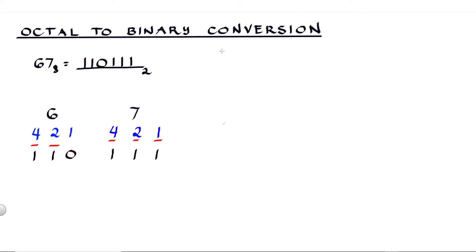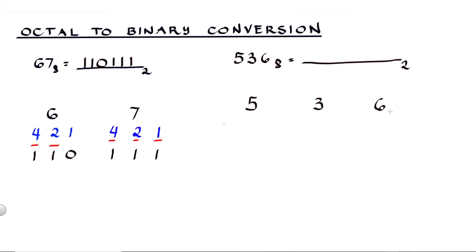For our second example, let's say we have 536 octal and we are going to convert that into binary. Write the numbers with enough space in between — so this is 5, this is 3, and this is 6. Each octal digit is represented by three binary digits: 1 (2 raised to 0), 2 (2 raised to 1), and 4 (2 raised to 2). Since 6 is the sum of 4 and 2, we use 4 — so this is 1 — and we use 2 — so this is 1 — and we don't use 1, so this is 0.